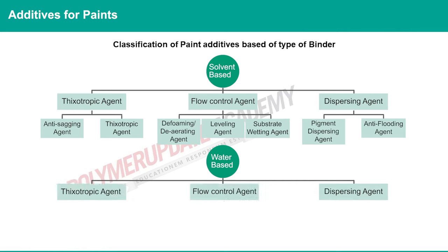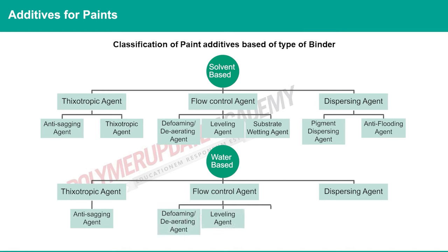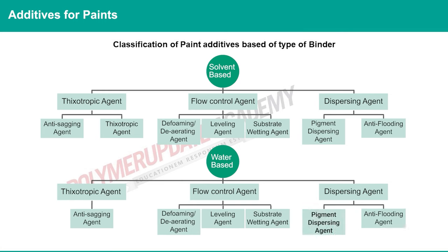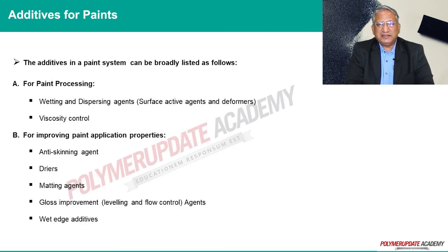In the case of water-based paints, the additives are also thixotropic agent, flow control agent, and dispersing agent. For water-based paints, thixotropic agent is the anti-skinning agent; flow control agent includes de-foaming or de-aerating agent, leveling agent, or substrate wetting agent. For dispersing agent, it is again divided into pigment dispersing agent and anti-flooding agent.